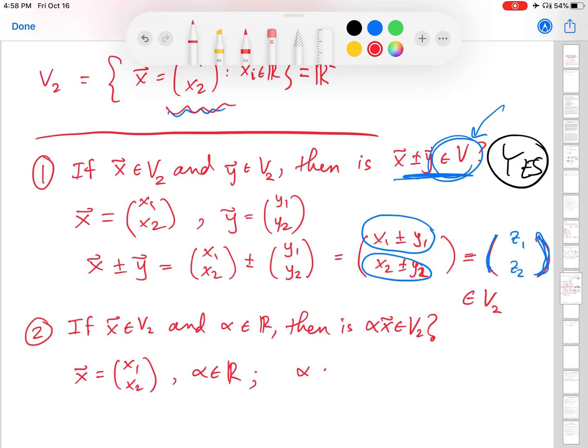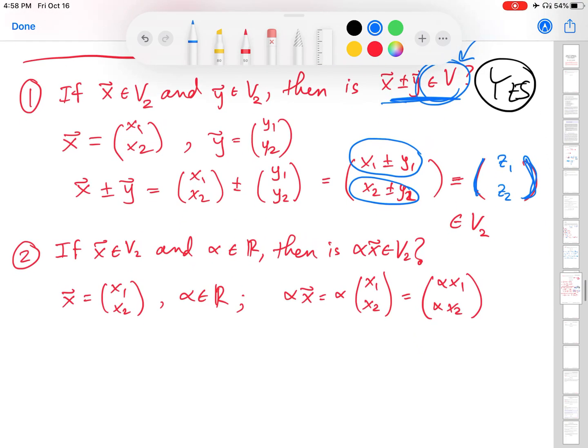Then, when I do alpha times x, it goes back again to a definition of how we multiply a matrix by a number. Remember, we said you multiply every single component of the matrix by that number. Similar to the reasoning we just used, if I have alpha that's a real number multiplied by x1, another real number, I get some other real number, let me just call it w1. Similar thing down here, I get some other real number, w2. So I have obtained another element of the space V2. Once again, my answer to this question is yes.